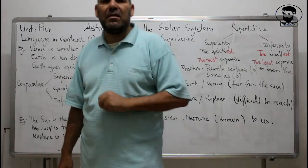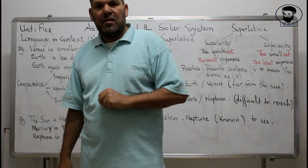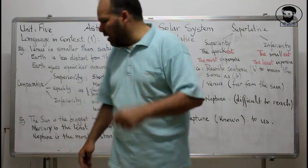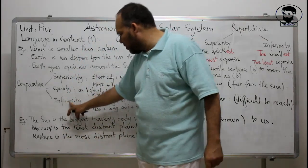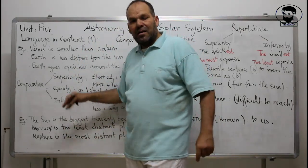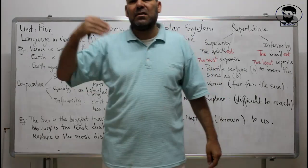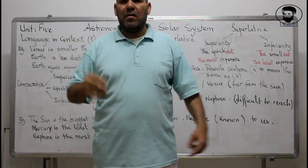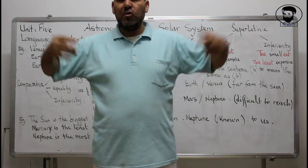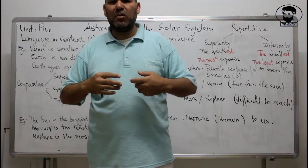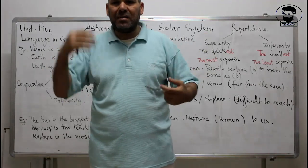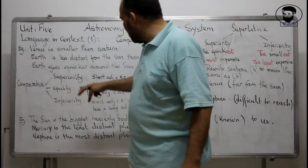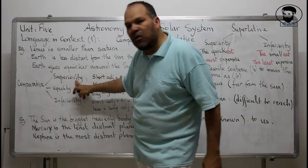Words like lazy, lazier, and tiring carry negative meanings, so they express inferiority. Words like expensive, decent, big, huge, gigantic, intelligent, and clever carry positive meanings, so they express superiority. For example: 'this person is more intelligent than this person' — here 'more intelligent' expresses superiority, while 'less intelligent' expresses inferiority.